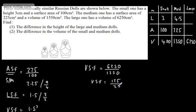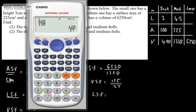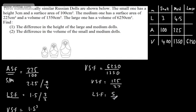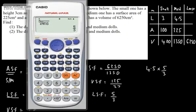To get the linear scale factor, we take the cube root of 125/27, which gives us 5/3. That is the linear scale factor between the medium and large dolls. So to find the height of the large doll, I multiply 4.5 by 5/3, which gives me 7.5 centimetres.